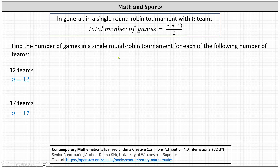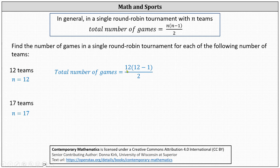Let's look at some examples. We're asked to find the number of games in a single round robin tournament for each of the following number of teams. First, with 12 teams, n equals 12, so the total number of games equals 12 times the difference of 12 and 1, divided by 2 — that's 12 times 11 divided by 2, which gives us 66 games.